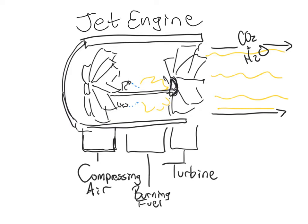How a jet engine works: it starts with a big fan up front whose job is to compress air. Air comes in from the outside at low pressure, and we want it at high pressure, so it runs through a compressor and gets compressed really small. It goes through more than one set of rotors, but I'm only drawing one. Then we mix some jet fuel in — jet fuel is a hydrocarbon product like gasoline, super flammable — introduced as a very fine mist so it will be very easy to burn. There's a source of ignition — something like a spark plug — and it goes up.